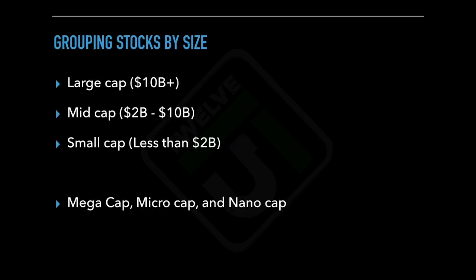When grouping stocks by size, they are categorized into three major groups: large cap, mid cap, and small cap. These groups can also be broken down into further groups called mega cap, micro cap, and nano cap. But large, mid, and small are going to be the major categories.